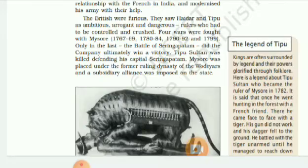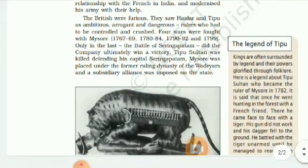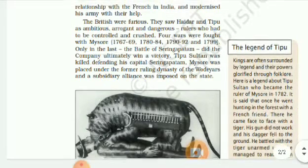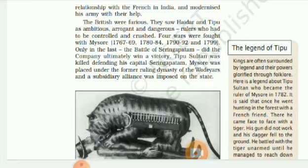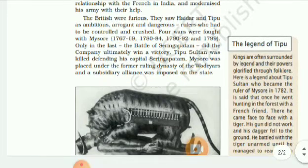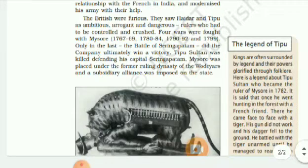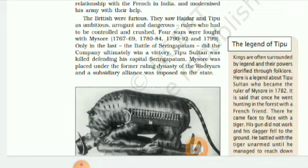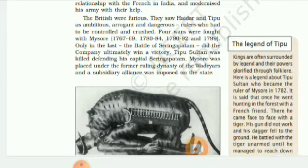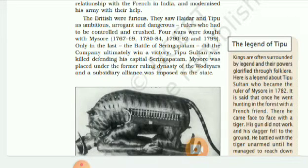The First Anglo-Mysore War was fought from 1767 to 1769 between the British and Mysore. Suspicious of the rise of Hyder Ali's power, the Nizam of Hyderabad formed a coalition with the British and attacked Mysore. However, Hyder Ali defeated them and forced the British to sign a treaty by which they agreed to help each other in case of attack by a third party.